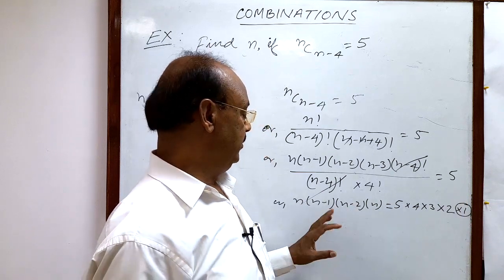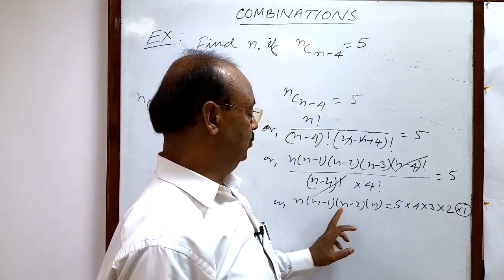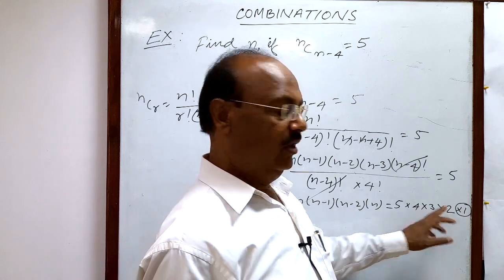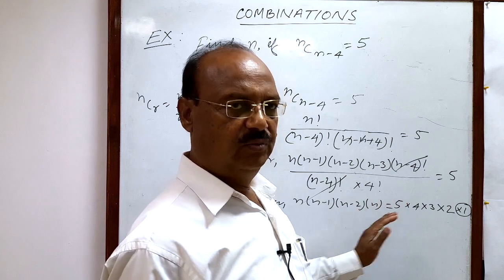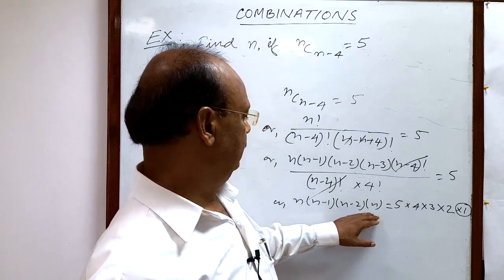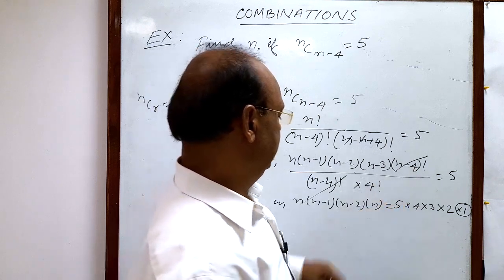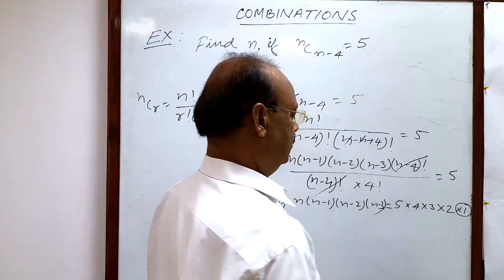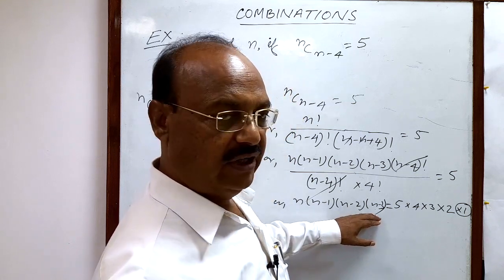You see, on the left-hand side we are having 4 factors. On the right-hand side also, we are having 4 factors. Here factors are decreasing by 1—this is n-3.